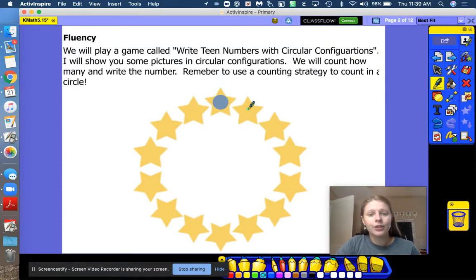Let's see how many we have. One, two, three, four, five, six, seven, eight, nine, ten, eleven, twelve, thirteen, fourteen. Can you write the number fourteen with me on the board? One and a four. What number is that? Fourteen. Nice job counting in a circle and stopping before you got back to the starting point. You don't want to keep counting in a circle.